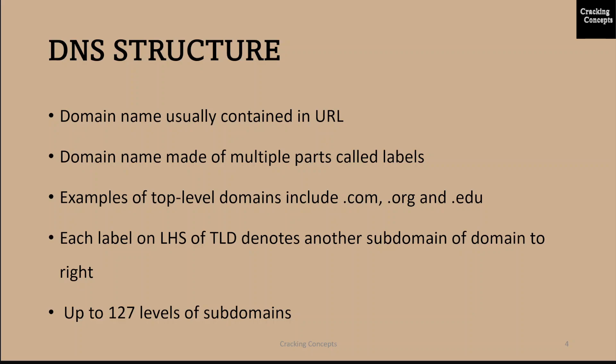Each label on the left hand side of the TLD denotes another subdomain of the domain to the right. For example, in the URL www.google.com, google is a subdomain of .com and www is a subdomain of google.com. There can be up to 127 levels of subdomains.